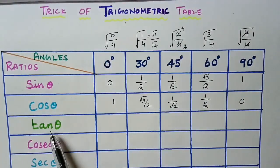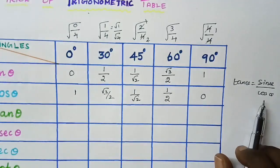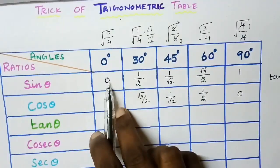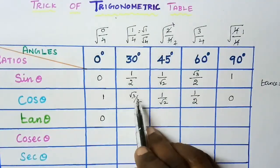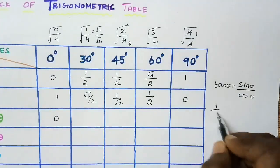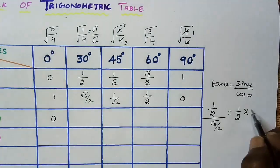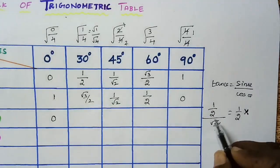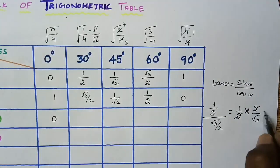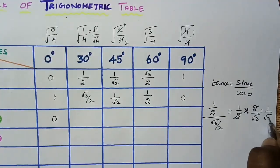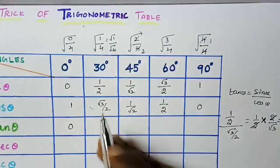Next we are going to find out tan theta values. We know that tan theta equals sin theta divided by cos theta. So 0 divided by 1 is 0. Next, 1 by 2 divided by root 3 by 2 — multiply 1 by 2 by the reciprocal of root 3 by 2, that is 2 by root 3. The 2s cancel and we get 1 by root 3.